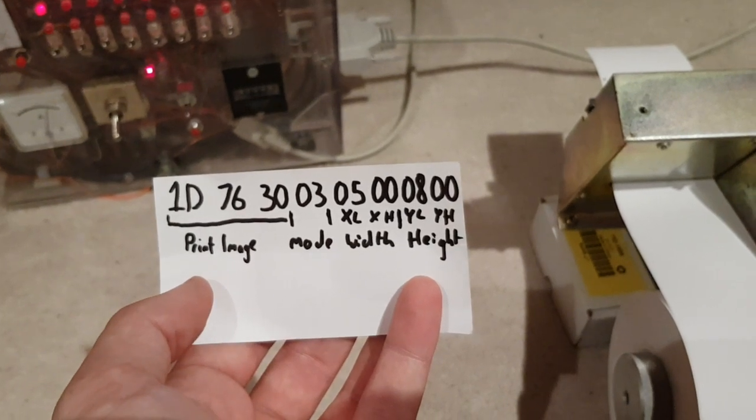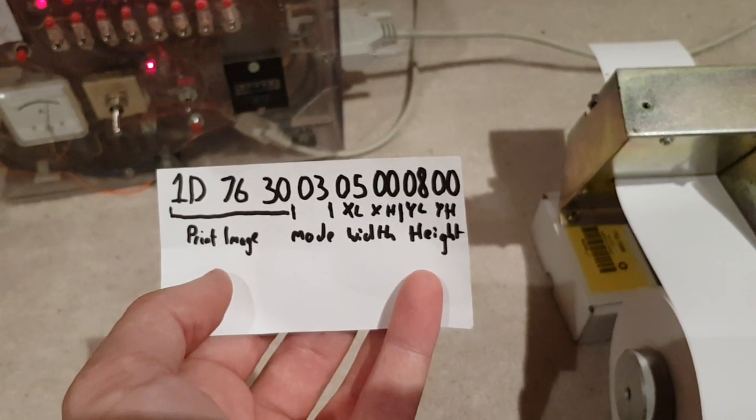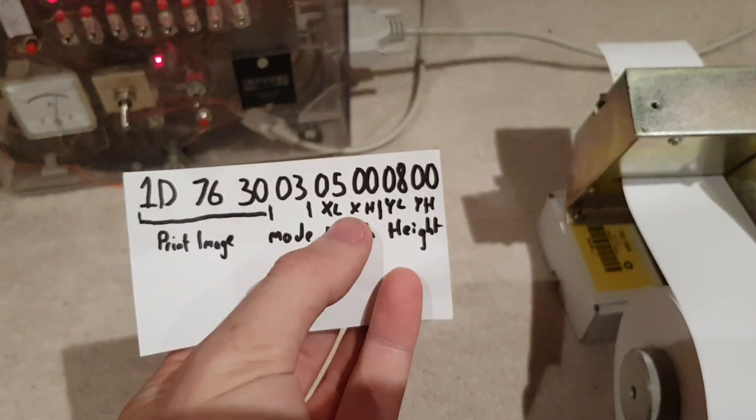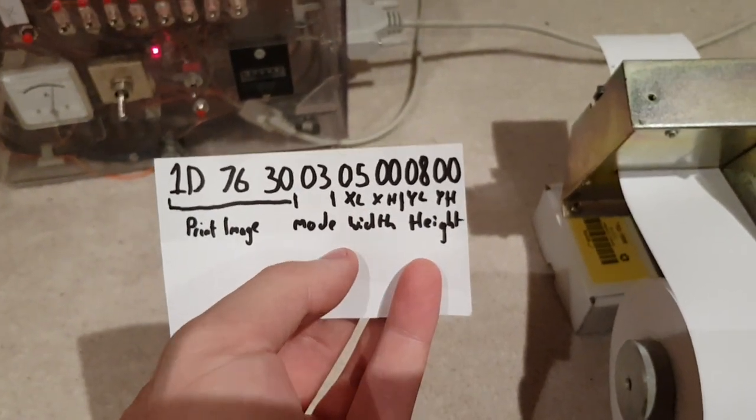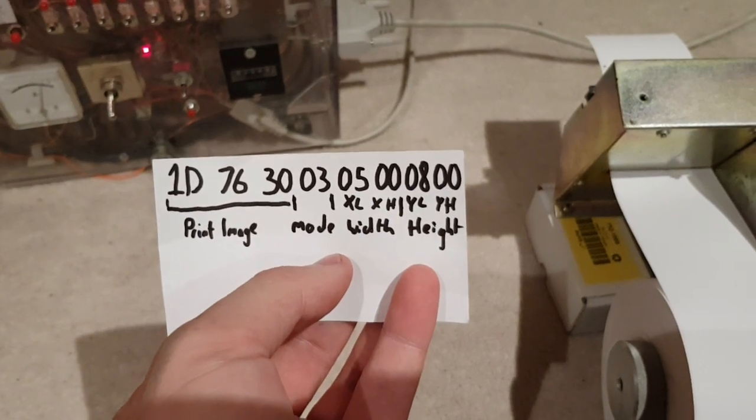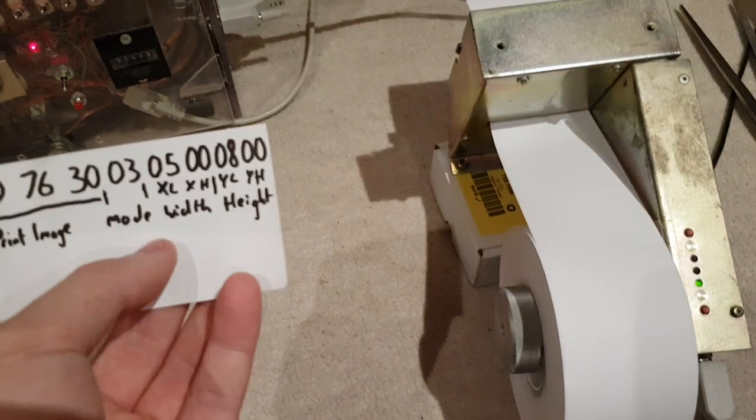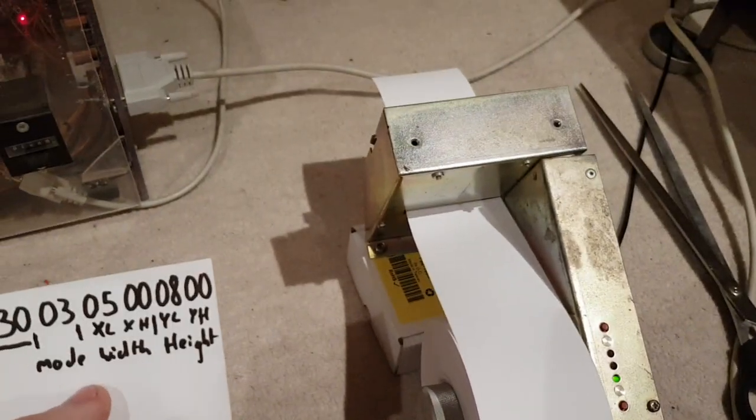So you can just stream it 1s and 0s in bytes. And each 1 is a black pixel, each 0 is a white pixel. And once it gets to the end of the allotted space, it'll just print the image and spit it out. So it's really quite simple, certainly in this instance, to talk to this printer.